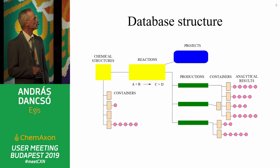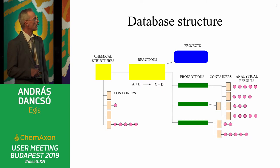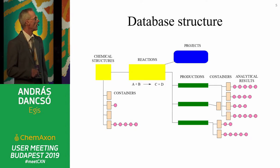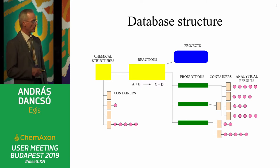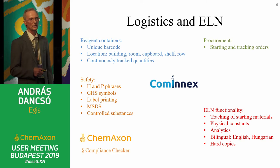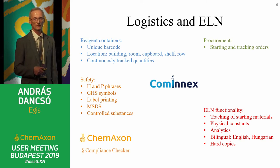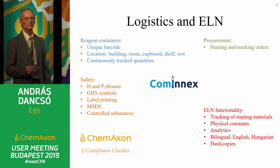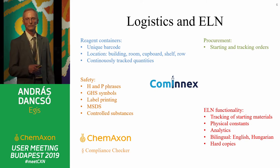If a reaction is realized, it's called a production, and the substances are stored in containers. Containers can be connected with production sets and with chemical structures both. Every container can be connected with analytical results. The work is organized into projects, which will have some significance on a later slide.